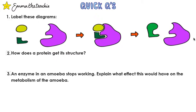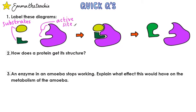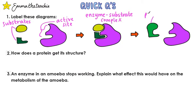Question one: label these diagrams. At the start we have two substrates, and they are going to bind or attach to the active site of the enzyme. The next stage is called the enzyme-substrate complex — you don't need to label that as it's not on the spec. Over here we can see the product, which in this case is the making of a larger molecule from two smaller ones.